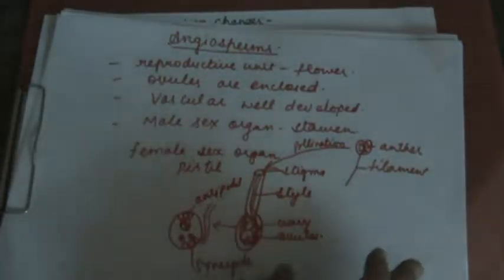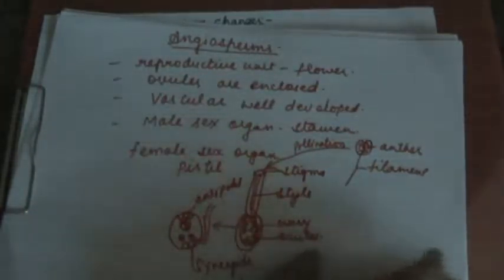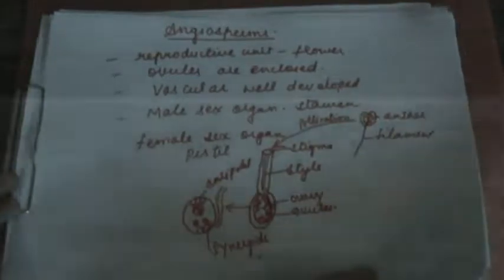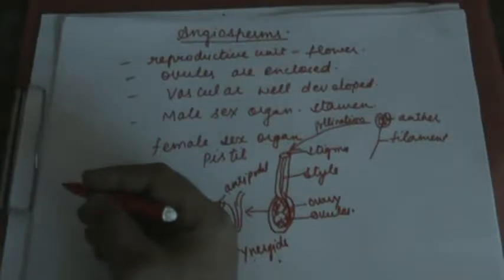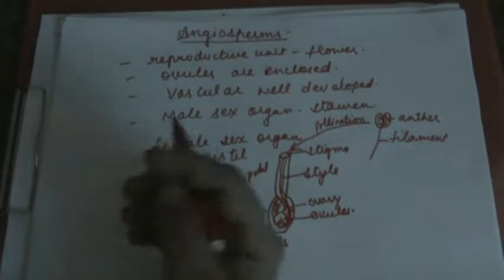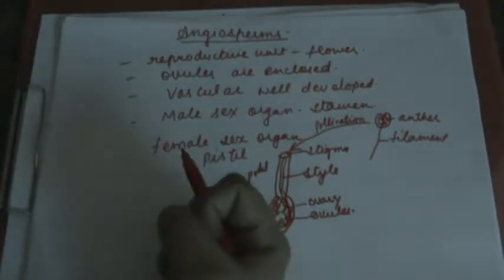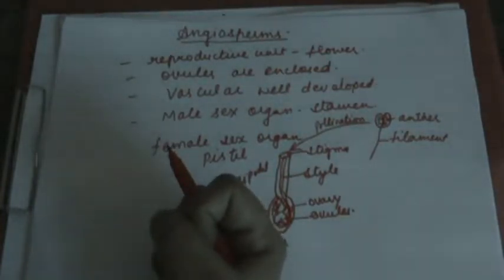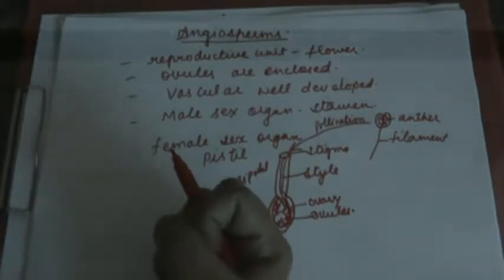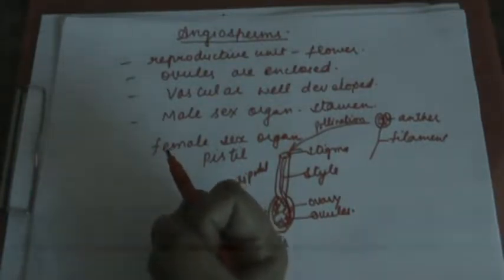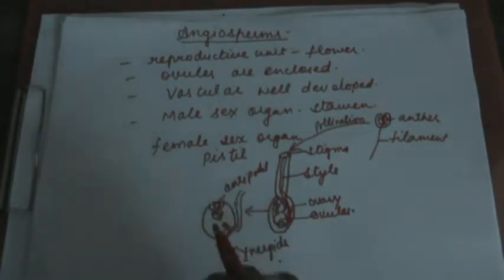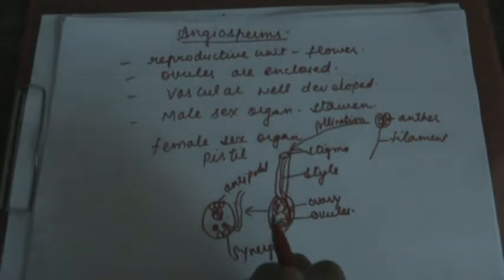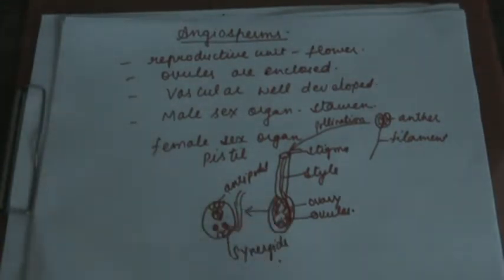Angiosperms can be classified into two groups: those having one cotyledon are known as monocotyledons, and those having two cotyledons are known as dicotyledons. Examples of monocotyledons are maize and rice, while examples of dicotyledons are wheat and pea. In the next session we will discuss alternation of generations. Thank you and have a nice day.